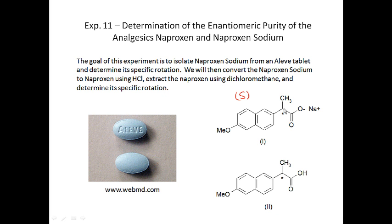The S-enantiomer has analgesic properties, whereas the R-enantiomer has some liver toxicity issues. So when you get an Aleve tablet — or a generic Aleve tablet, which is what we're going to use this week — you should get only the S-enantiomer. Each tablet contains 220 milligrams of naproxen sodium.